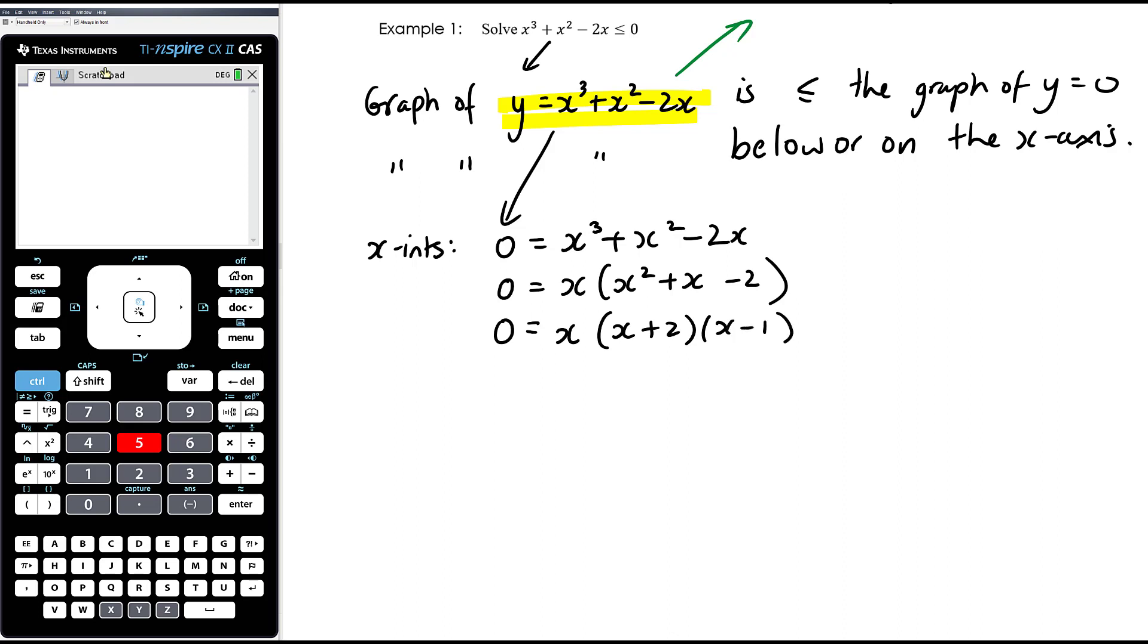And so we can see that the null factor law tells us we're going to have x-intercepts at x equals 0, x equals negative 2, and x equals 1. And because each of those factors is a linear factor, it's to the power of 1, we're going to be cutting through the axis at each of those three values.